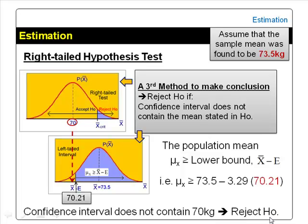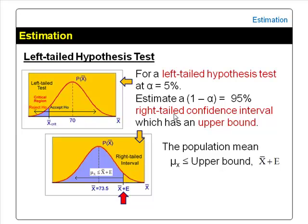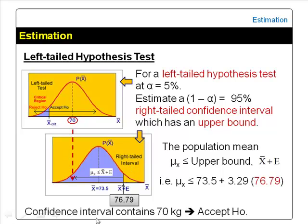This conclusion is the same as what we obtained in the hypothesis test. For a left-tailed hypothesis test at α = 5%, we estimate a 95% right-tailed confidence interval, which has an upper bound but no lower limit. The peak is at the sample mean, 73.5 kg, and the upper bound is given by the sample mean plus the margin of error. The population mean can be any value less than or equal to 76.79 kg. Since this interval contains the 70 kg stated in the null hypothesis, we accept the null hypothesis — the same conclusion as in the hypothesis test.